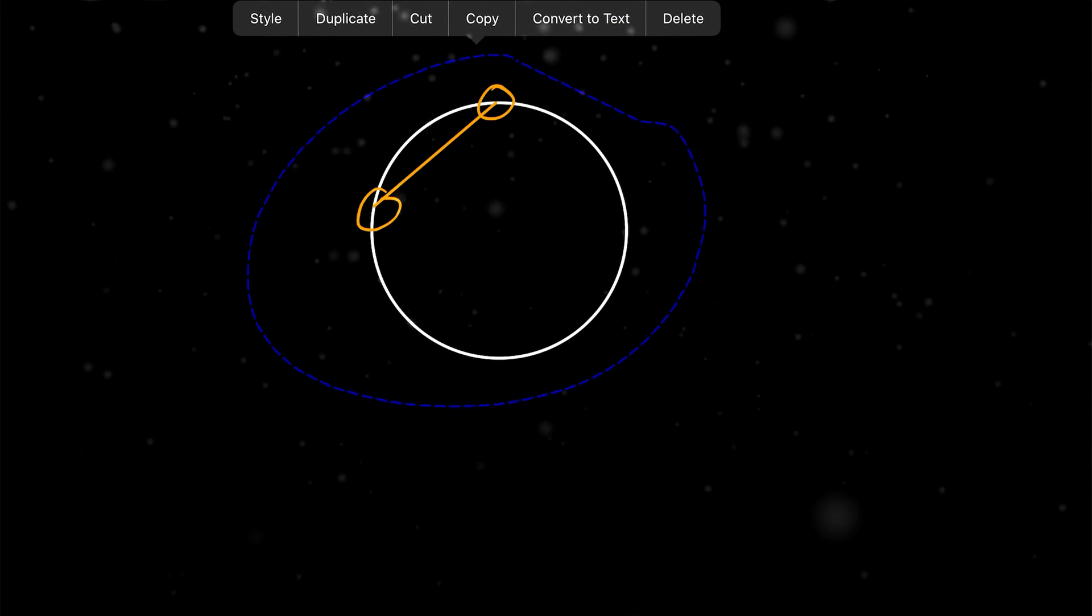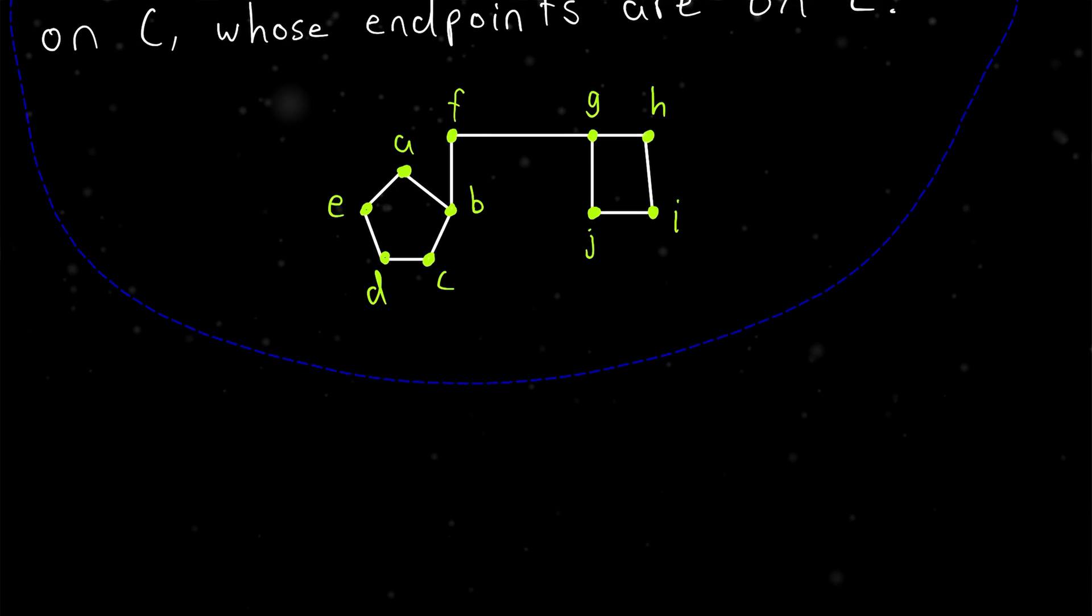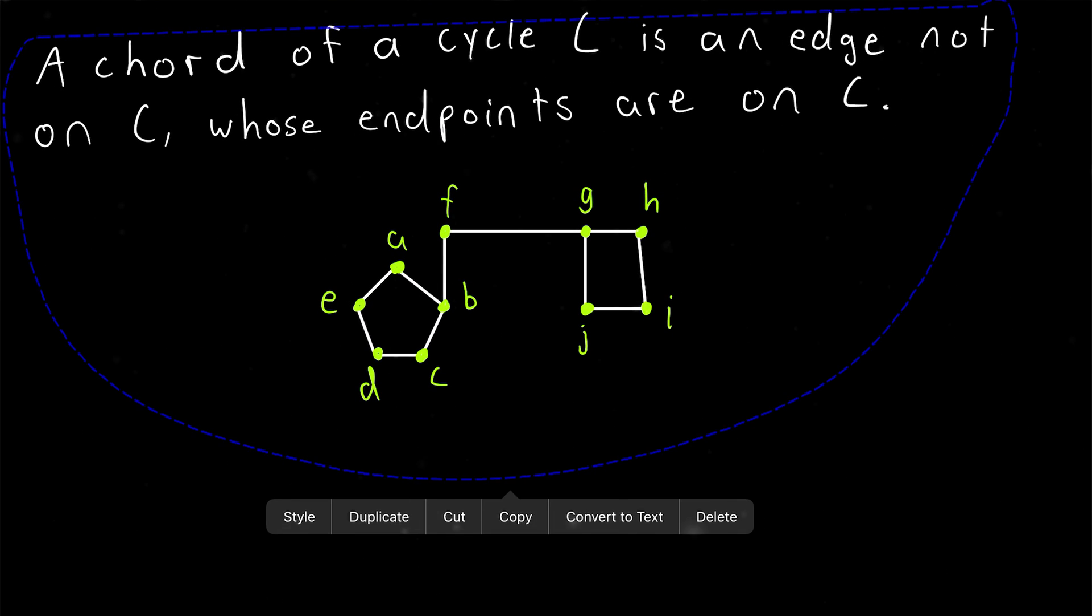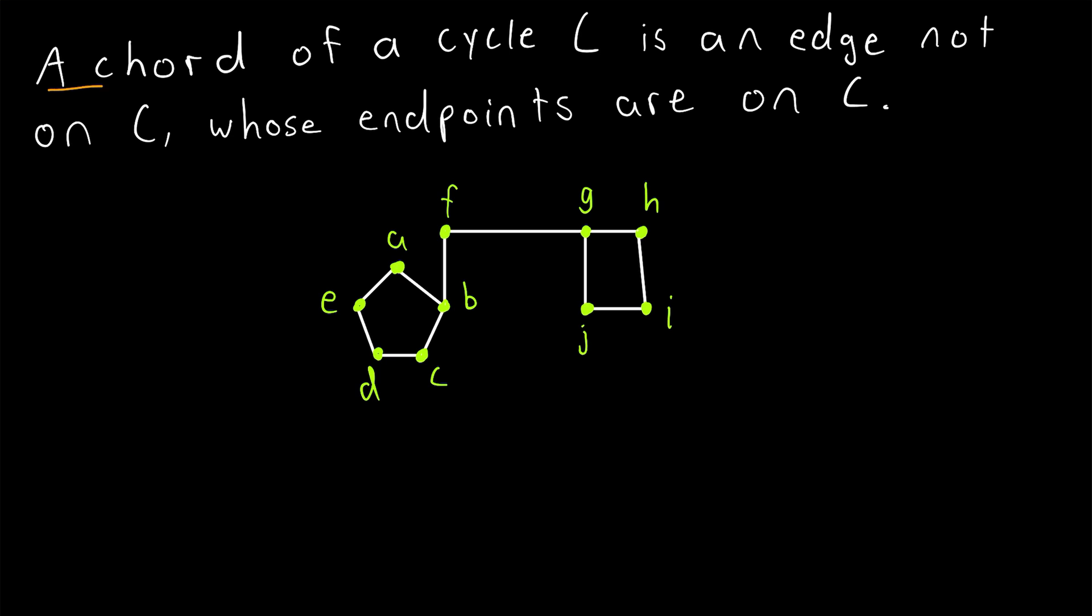Chords of cycles in graph theory are kind of similar, so here is our definition and we'll check out some examples. A chord of a cycle C is an edge not on C whose endpoints are on C.